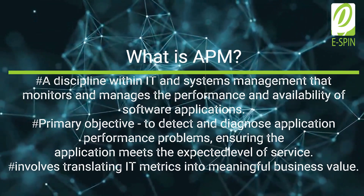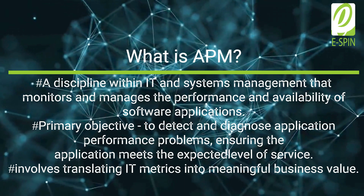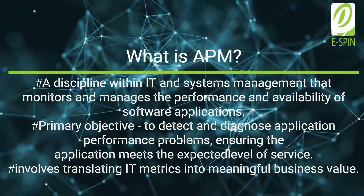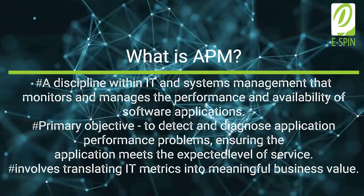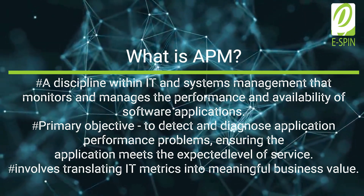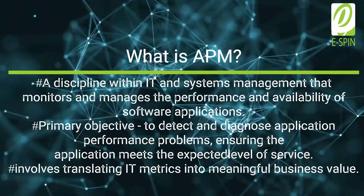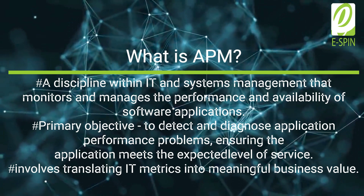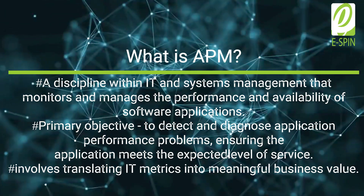What is Application Performance Management, APM? APM is a discipline within the fields of information technology and systems management that focuses on monitoring and managing the performance and availability of software applications. The primary objective of APM is to detect and diagnose application performance problems to ensure the application maintains the expected level of service. It involves translating IT metrics into meaningful business value.